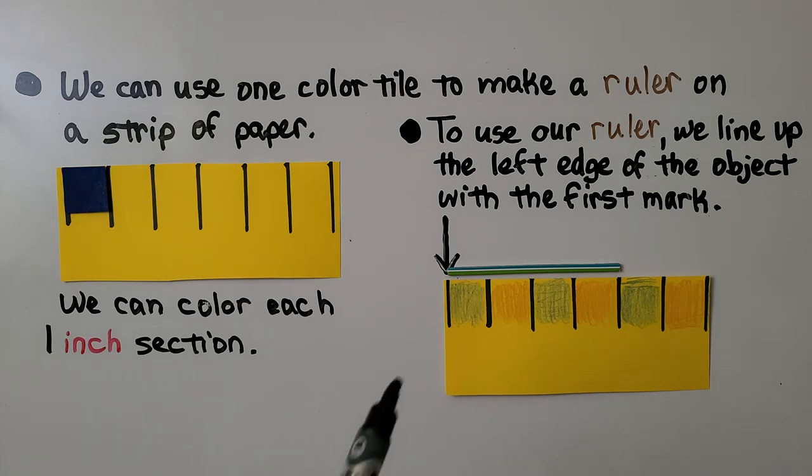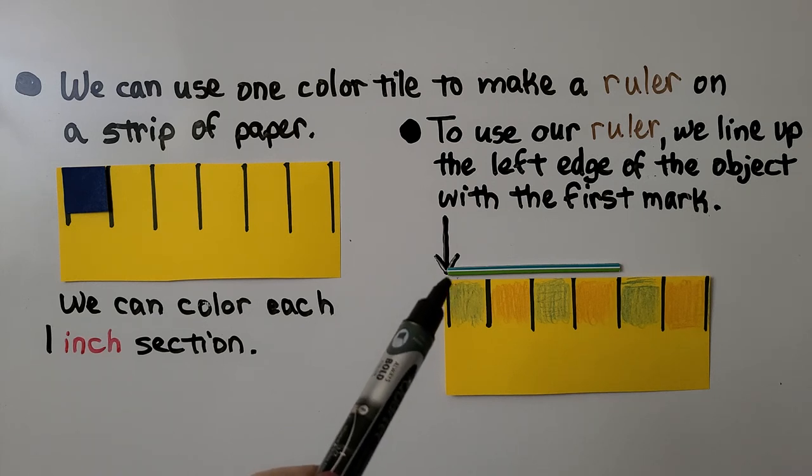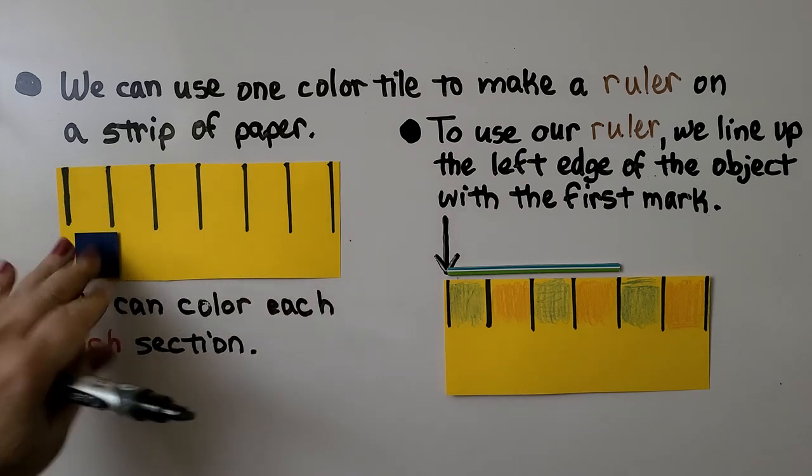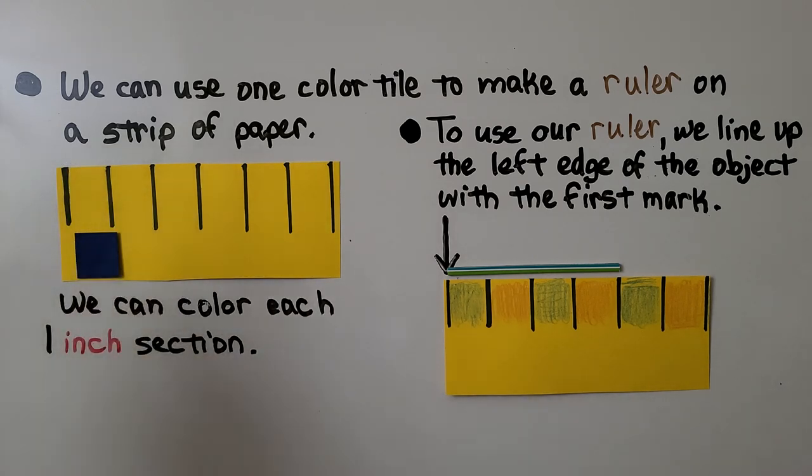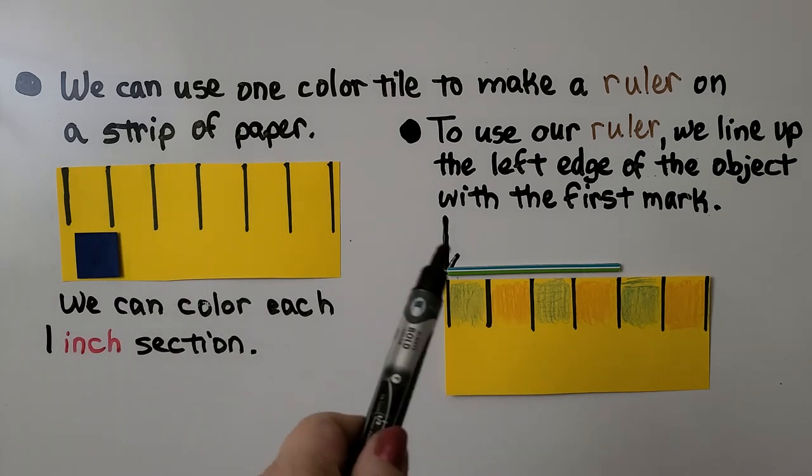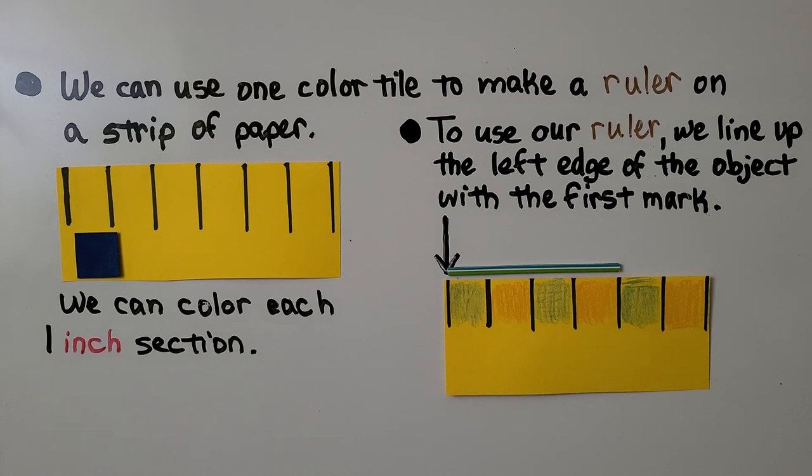And to use our ruler, we line up the left edge of the object with the first mark. So we wouldn't line the object up with the edge of the paper. We would line it up with this first mark right here because there is a little space there. And we can see this is one, two, three, four sections, four parts. It must be about four inches.